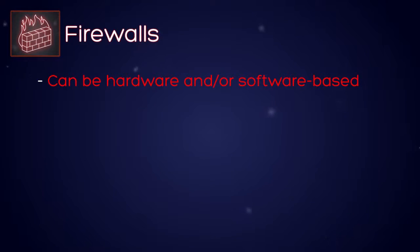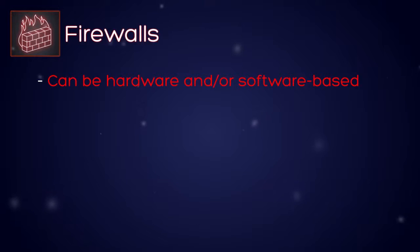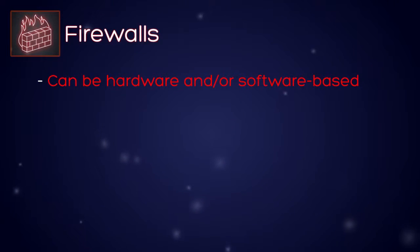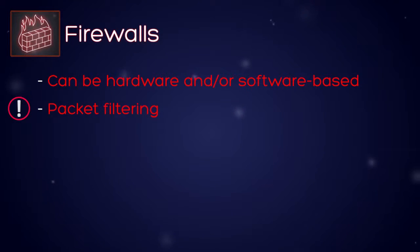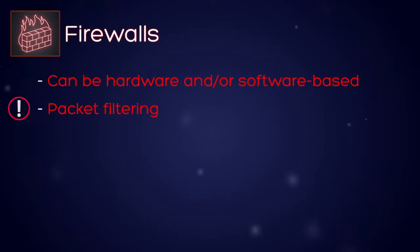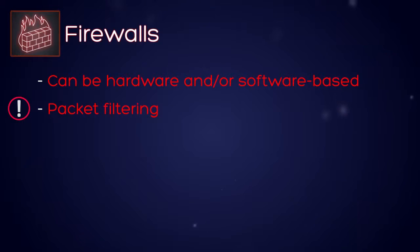For the exam, the most important thing is to understand the function of a firewall. There are future Cisco certifications that address the different types of Cisco firewalls, but we won't worry about those here. The biggest function of a firewall is simply packet filtering, usually near the edge of a network. In the previous diagram, the firewall was located next to the external router because the job of the firewall is to look at incoming traffic and filter it.